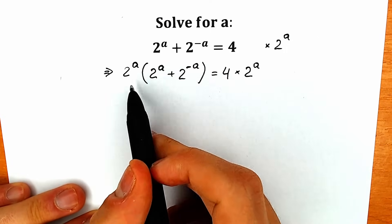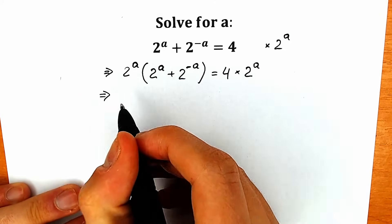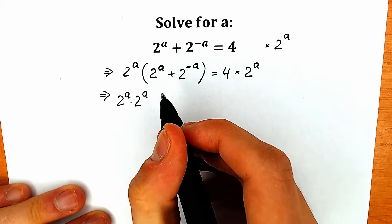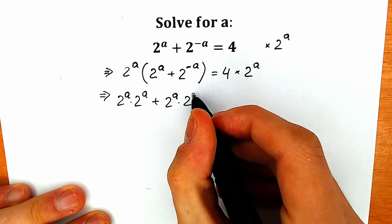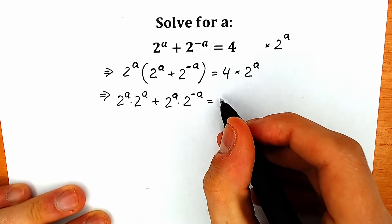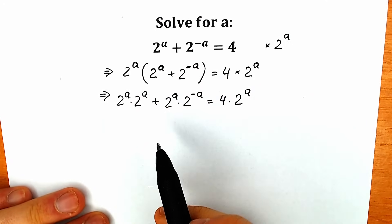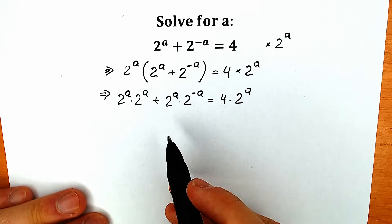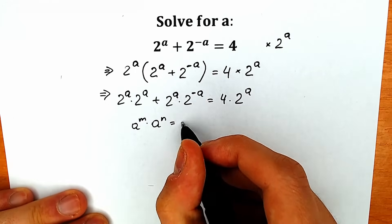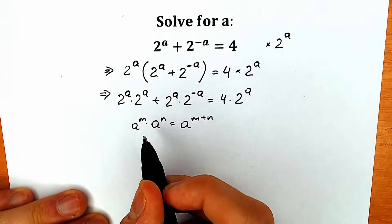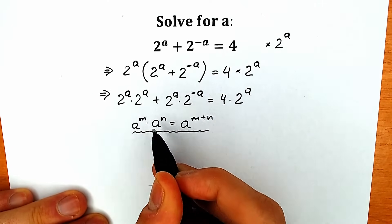Now let's distribute 2^a into the parenthesis. We get 2^a times 2^a plus 2^a times 2^(-a), equal to 4 times 2^a. We need to apply the important property: a^m times a^n equals a^(m+n). When we have the same base but different powers, we can add the powers and use a common base.